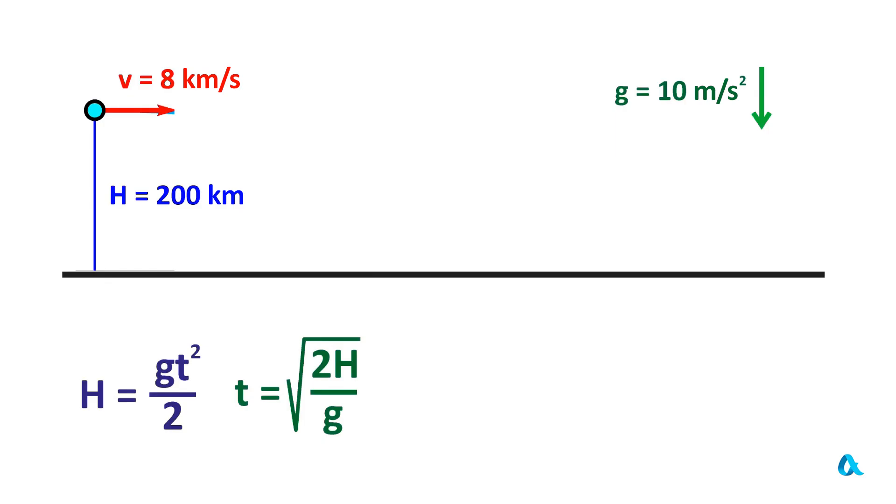From this, t equals the square root of 2h divided by g. And for our data, this time is 200 seconds.